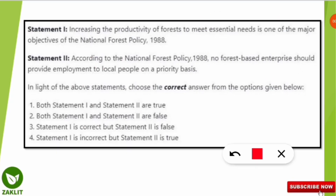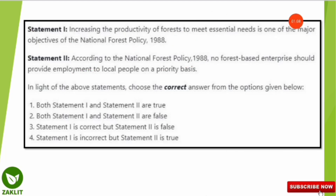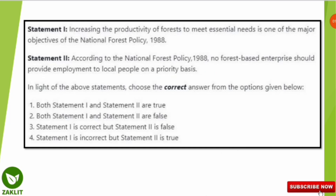We'll start with a question where two statements were given. Nowadays questions come where two statements are given and you have to select which are correct or false. Statement one: increasing the productivity of the forest to meet essential needs is one of the major objectives of the National Forest Policy 1988. Statement two: according to the National Forest Policy 1988, no forest-based enterprise should provide employment to local people on a priority basis.